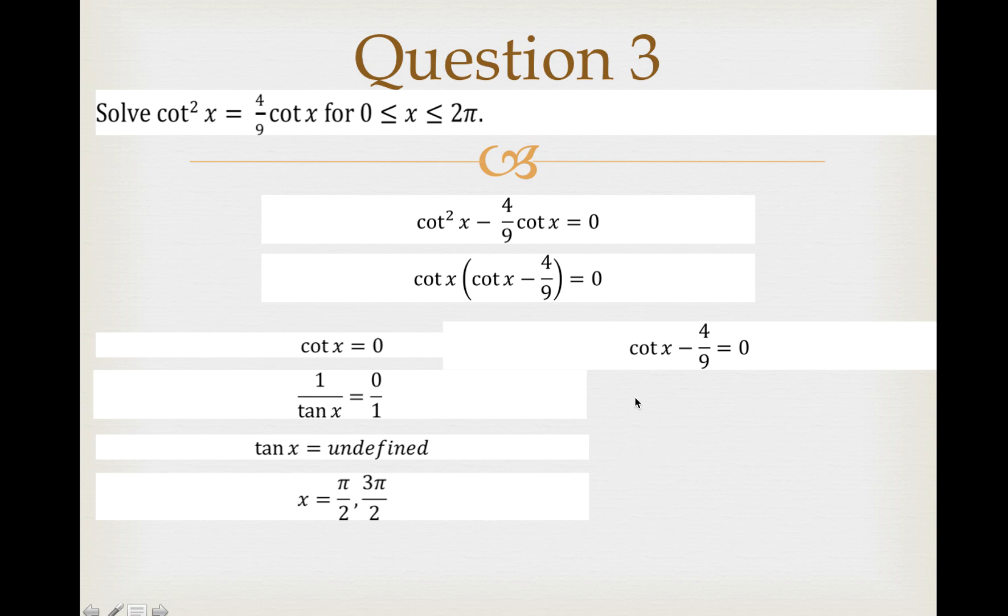Now moving on to the next equation: cot x - 4/9 = 0. You will have 1/tan x = 4/9.